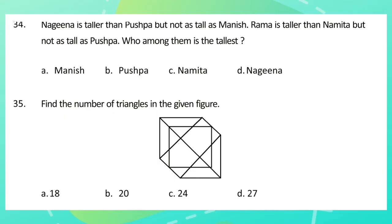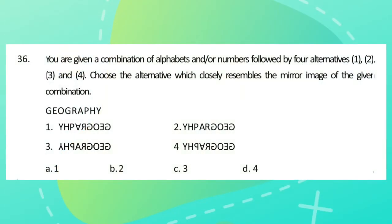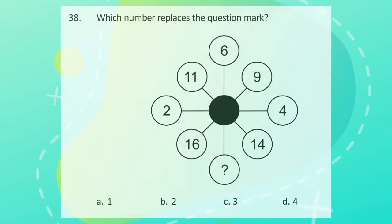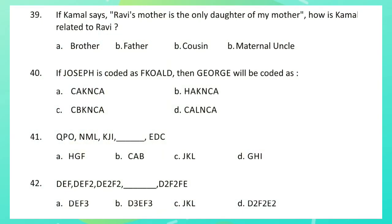Question 35: Find the number of triangles in the given figures. Question 36: You are given a combination of alphabets and/or numbers followed by four alternatives — 1, 2, 3, and 4. Choose the alternative which closely resembles the mirror image of the given combination. Question 37: Which number replaces the question mark? Question 38: Which number replaces the question mark? Question 39: Ravi's mother is the only daughter of my mother. How is Kamal related to Ravi?